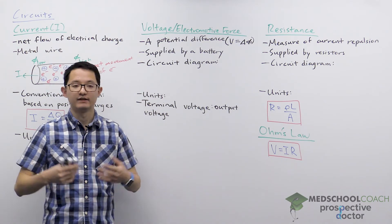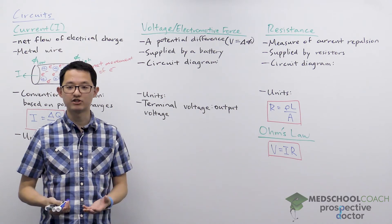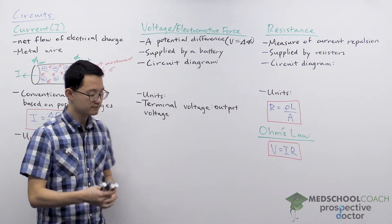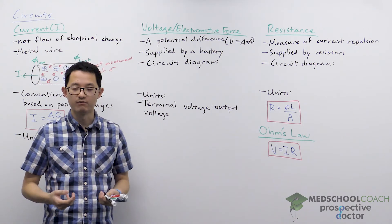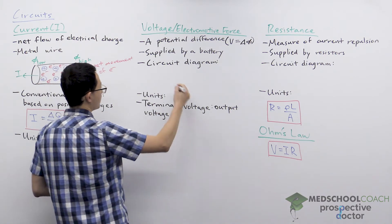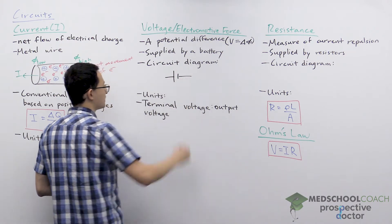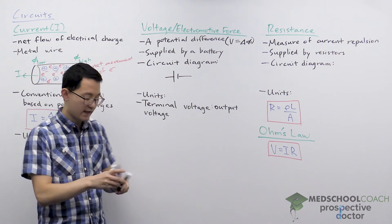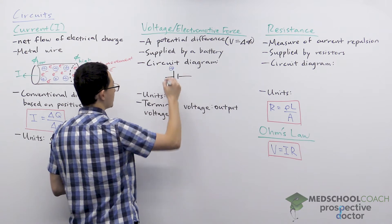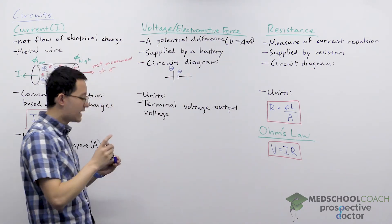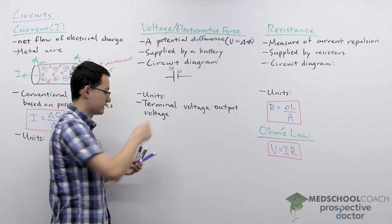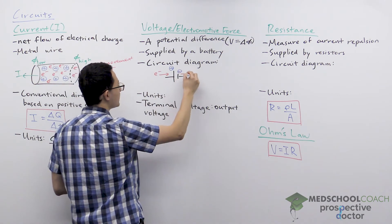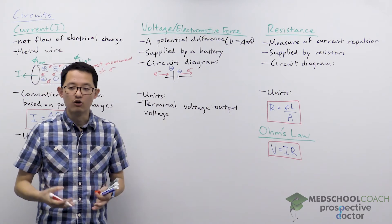Batteries can have various sources — one you'll recall from electrochemistry videos is galvanic or voltaic cells, which can supply a voltage. Since a battery is a circuit component, we need to know its circuit diagram, which generally looks like two parallel plates. The longer plate is always the positive plate, and the shorter plate is always the negative plate. The positive plate is at higher potential, so electrons always move towards it and away from the negative plate.